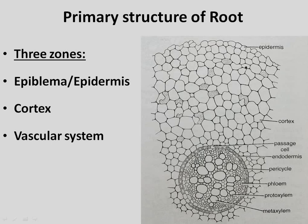Within the Vascular System boundary, we include two layers. The first layer is Endodermis, the next layer is Pericycle, and the true vascular bundle which contains Xylem and Phloem.